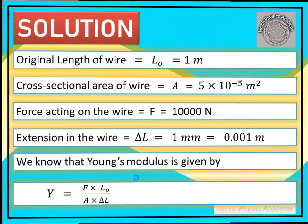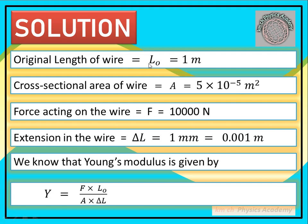آئیں data لکھتے ہیں۔ Original length of wire، اس کو L0 رکھیں گے، یہ 1 meter ہے۔ Cross-sectional area of wire، اس کو A رکھیں گے، یہ 5 × 10⁻⁵ meter square ہے۔ Force acting on the wire، یعنی اس کے اوپر لگائی گئی force، وہ F رکھیں گے، یہ 10,000 newton ہے۔